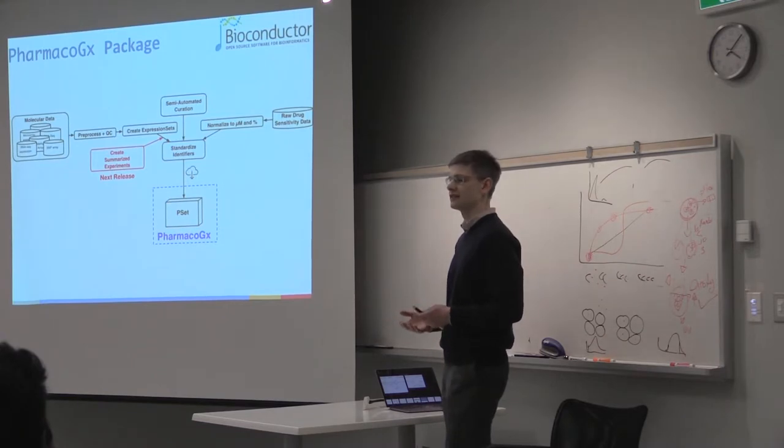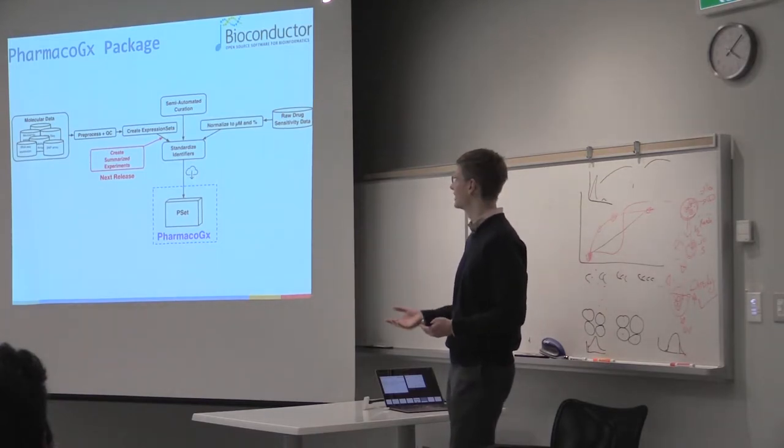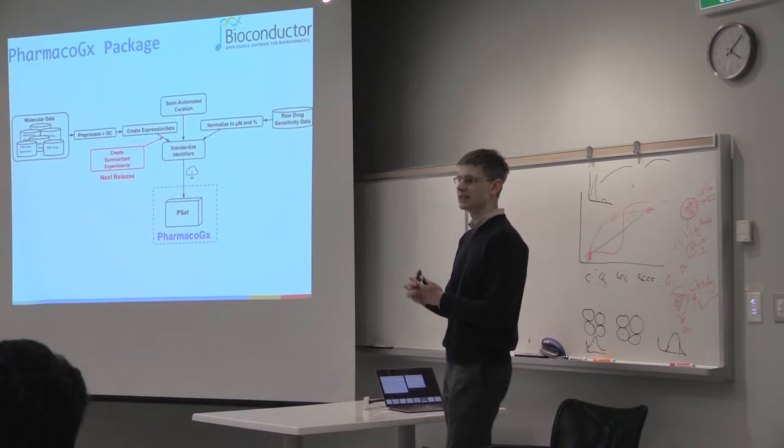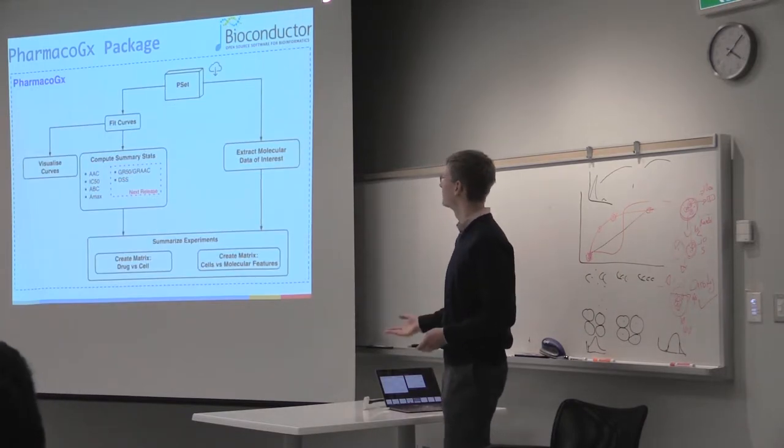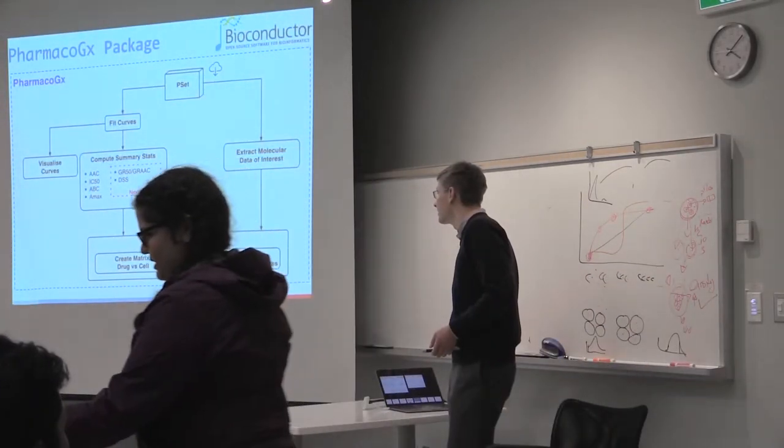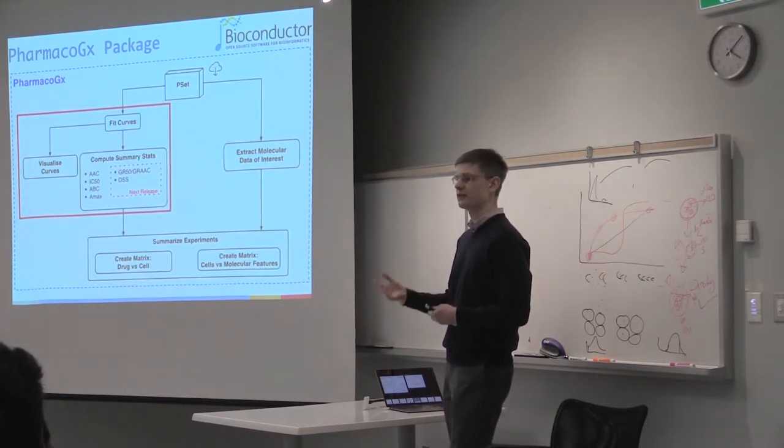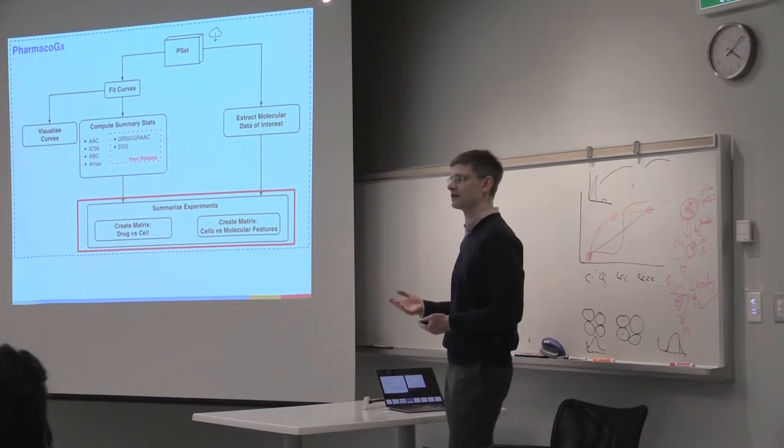For PharmacoGX, it's an R Bioconductor package. As I mentioned, we download all the data, reprocess it, standardize and normalize the data, re-annotate it with standardized identifiers, and create an R data structure which users can download from the internet to jumpstart their analysis. Once they download this object, we provide several utility functions to work with these datasets. Within PharmacoGX, we're focusing on the drug dose response data, providing functions that fit Hill slope curves to experiments and compute various statistics that quantify how sensitive each cell line was to drug treatment, integrating information across doses.